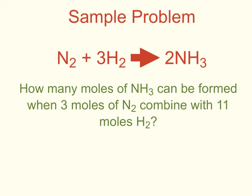Let's look at a sample problem. We are given the balanced equation: nitrogen gas plus three hydrogen gases yield two ammonia gases. The question is how many moles of ammonia can be formed when three moles of nitrogen gas combine with 11 moles of hydrogen gas. We know this is a limiting reactant problem because we are given two numbers to start with: three moles of nitrogen gas and 11 moles of hydrogen gas.